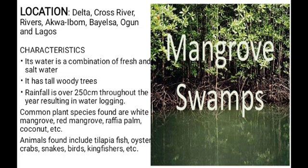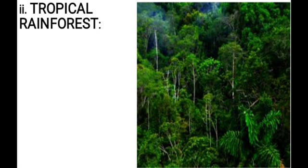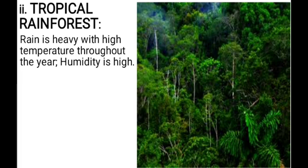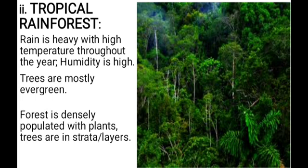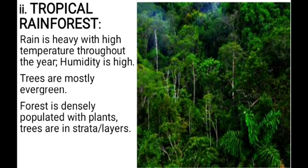The next type of biome in Nigeria is tropical rainforest. Here, rain is heavy with high temperature throughout the year, humidity is high, and the amount of rainfall is above 200 centimeters per annum. Trees are mostly evergreen, and the forest is densely populated with plants and trees arranged in strata or layers. Epiphytes are common in this biome.